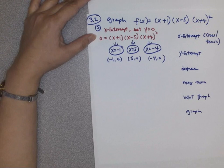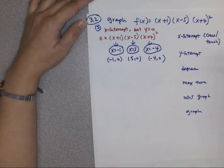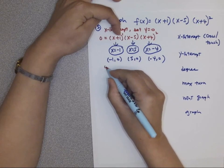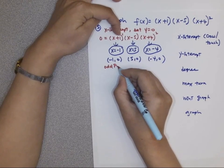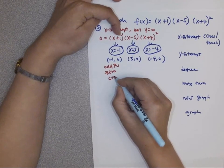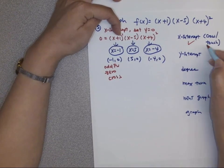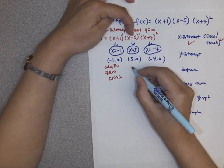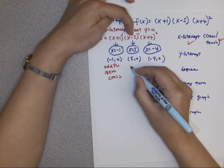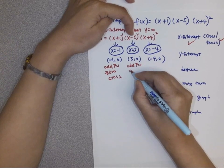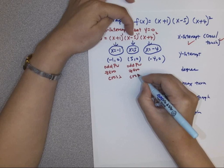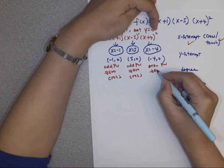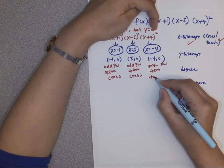Are they crossing or touching? The (−1, 0) zero has an invisible exponent of one — odd power zero, so crossing. The (5, 0) zero also has an invisible exponent of one — odd power zero, so crossing. The (−4, 0) zero has a power of two — even power zero, so touching.